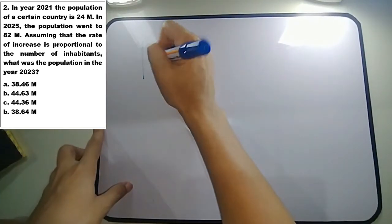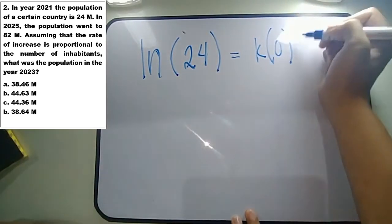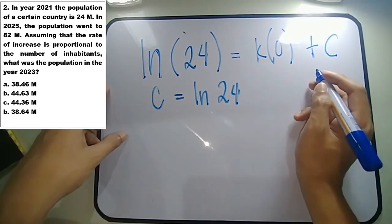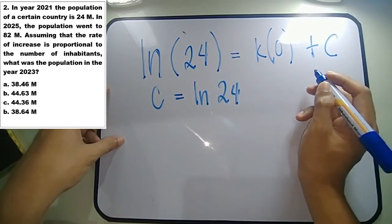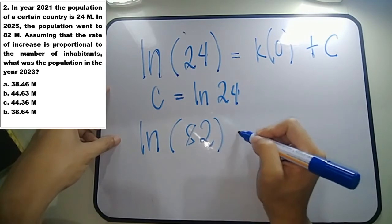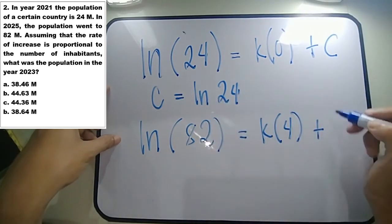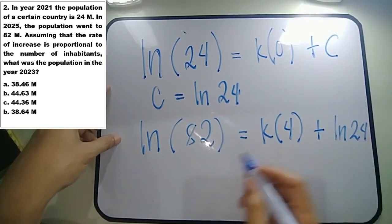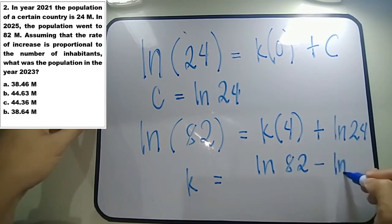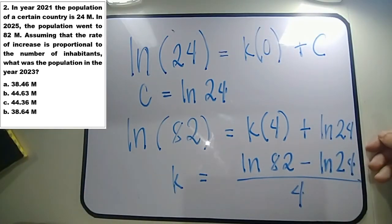Using the first condition, ln(24) equals k times 0 plus c, so c equals ln(24). Using the second condition at time 4 years, ln(82) equals k times 4 plus ln(24). Therefore k equals ln(82) minus ln(24), all over 4.